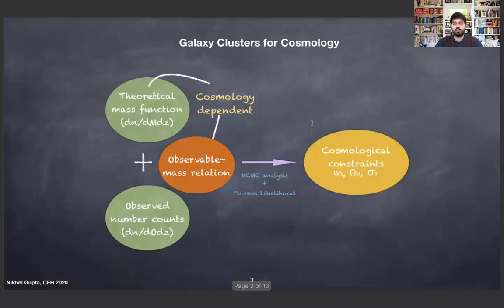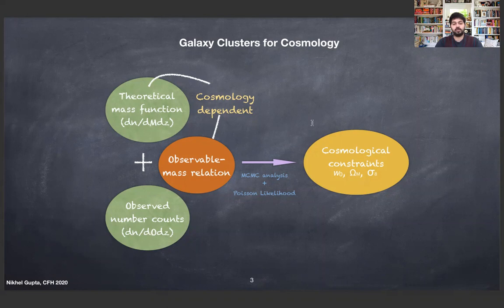Starting with why galaxy clusters are important and how we do cosmology with galaxy clusters. There are three basic ingredients to do cluster cosmology. The first is the theoretical mass function, usually estimated from simulations — it's the number of clusters per unit mass per unit redshift. The second is the observed number counts of galaxy clusters, which is the number of clusters observed in the sky as a function of observable and redshift.